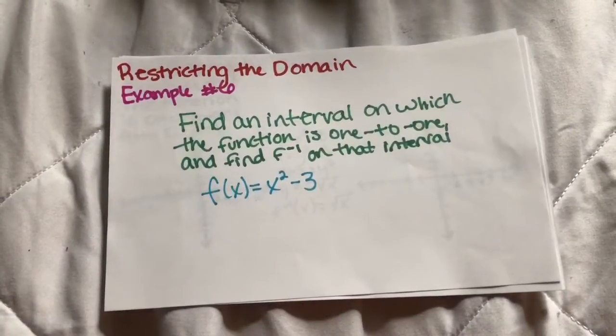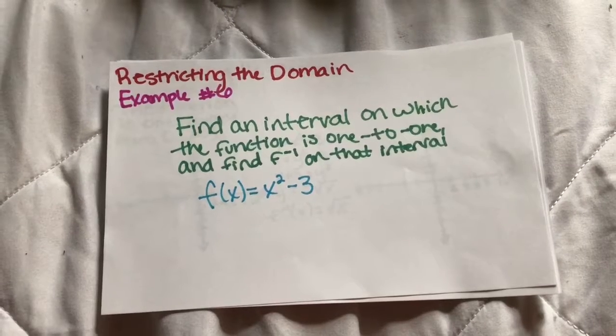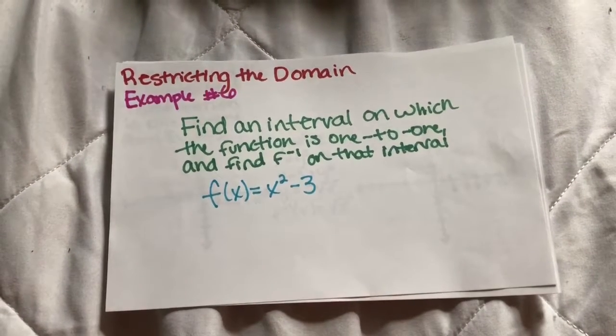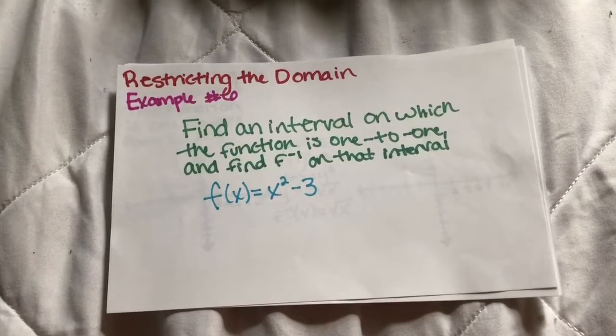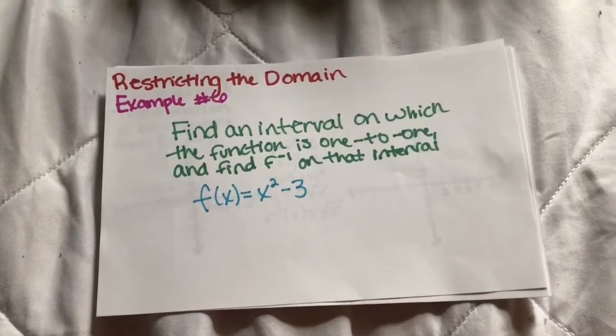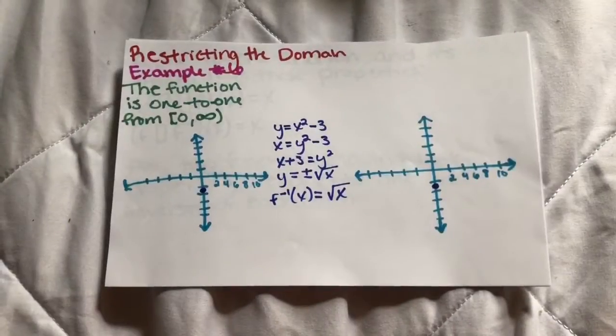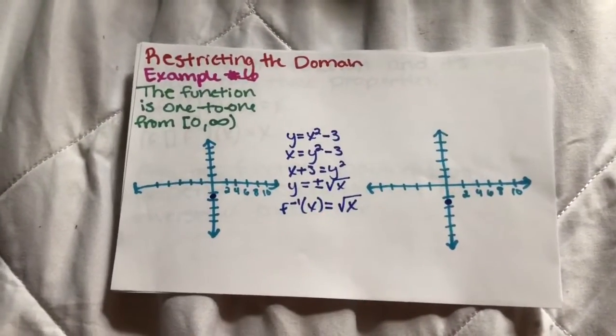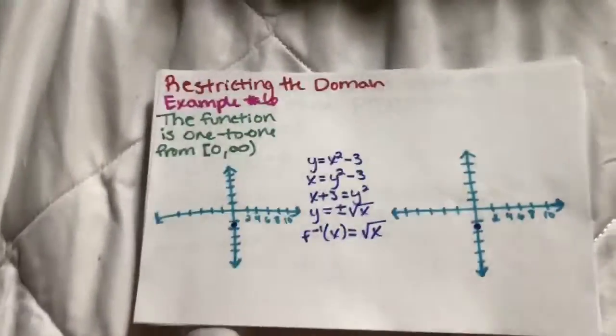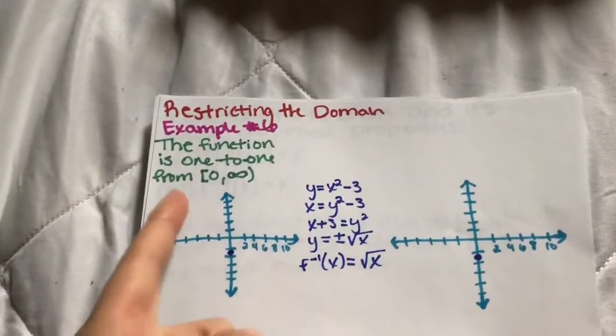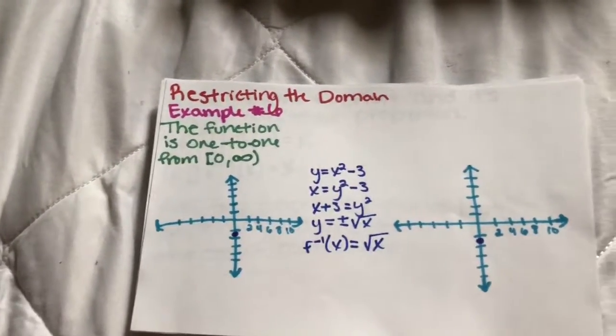Restricting the domain. Example 6. Find an interval on which the function is one-to-one and find the inverse of f on that interval. f(x) equals x² minus 3. This problem is simple. Solve just like a normal equation and end up with the square root of x and just plot it on the graphs. And you will end up with the function is one-to-one from 0 to infinity.